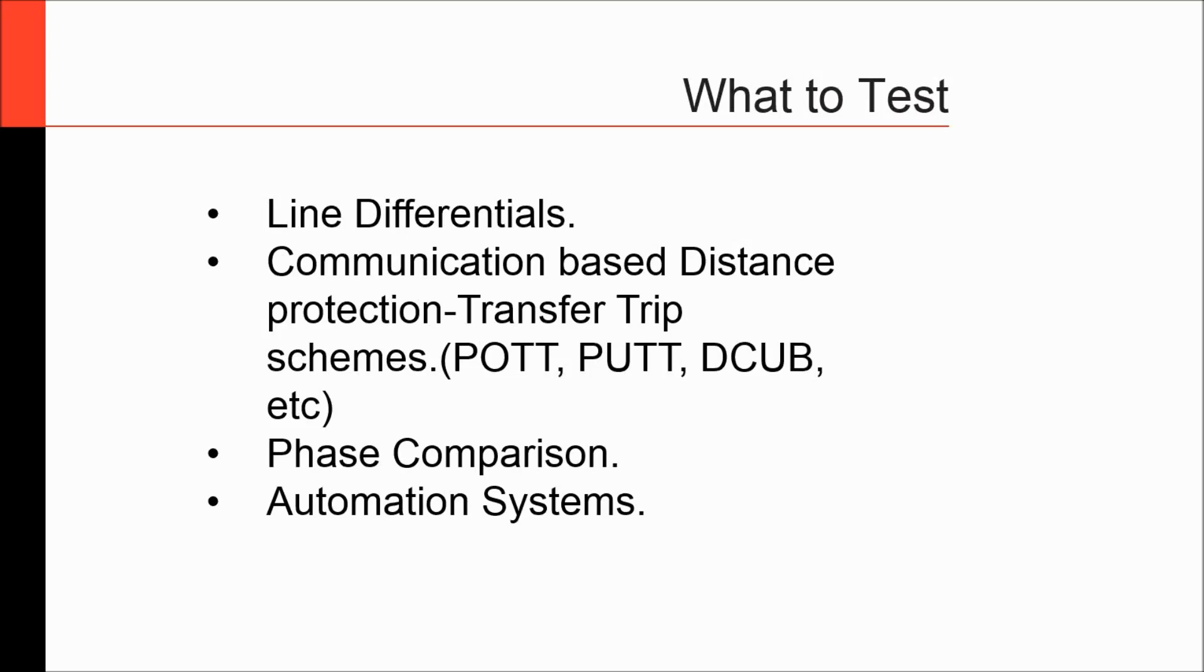What do you test? Well, from the thing we saw before, it is clear that when you're talking about end-to-end testing, what you are testing is any protection scheme that includes remote communication between relays. This is an example. You have a line, you have a relay in site A, a relay in site B. They are talking using some sort of communications protocol. Relay A is communicating to relay B whether he thinks that he should trip or not. Relay B is relaying that same communication to relay A. If both determine that they have to trip, then they'll trip together.